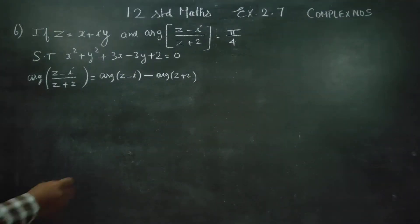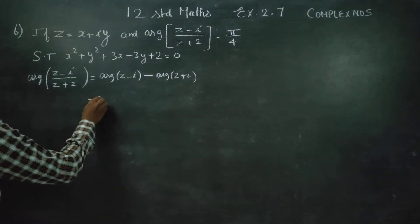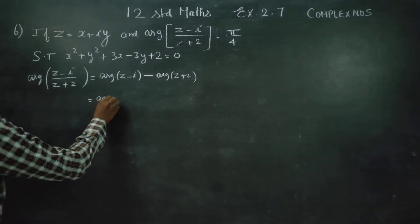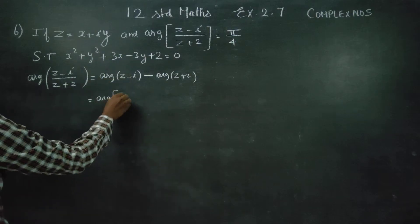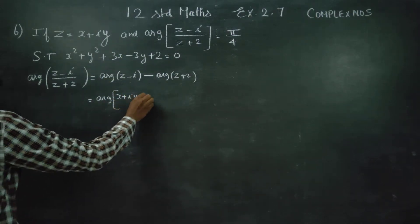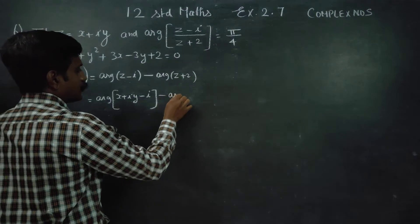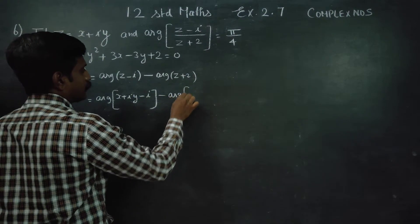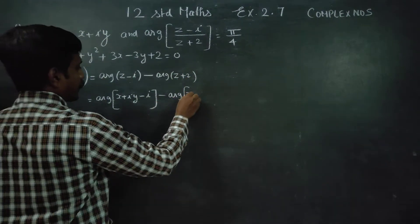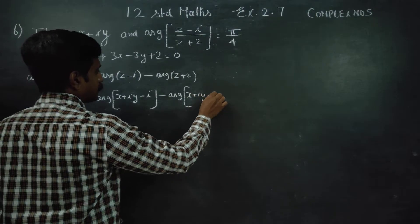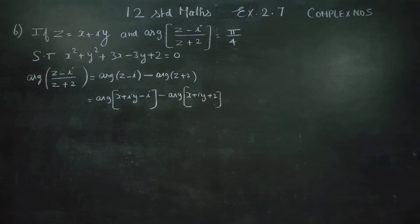We will start with argument of (z minus i) minus argument of (z plus 2). What is my z? It is x plus iy. So we get argument of (x plus iy minus i) minus argument of (x plus iy plus 2).